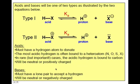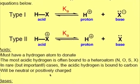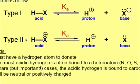When looking for an acid in solution, note that an acid is one of two types: type 1, shown here, and type 2, shown here.